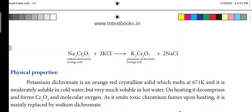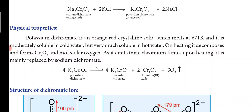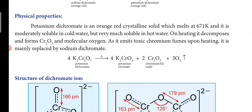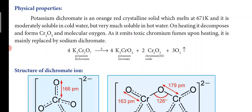Sodium dichromate reacting with sodium chloride solution gives us the orange-red color of potassium dichromate. Potassium dichromate is an orange-red crystalline solid which melts at 671 K. It is moderately soluble in cold water but very much soluble in hot water. On heating, it decomposes to form chromium oxide (Cr₂O₃) and molecular oxygen, emitting toxic chromium fumes.